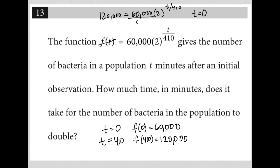I then divide both sides by 60,000. So I'd have 2 equals 2 to the t over 410. And then here, traditionally, you would use a logarithm. You would log both sides and do a lot of other fancy math here. I just don't think it's really required.